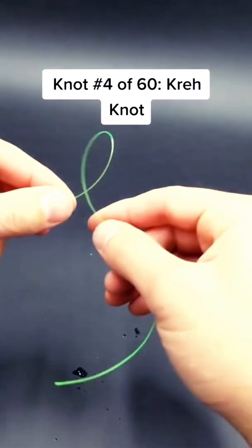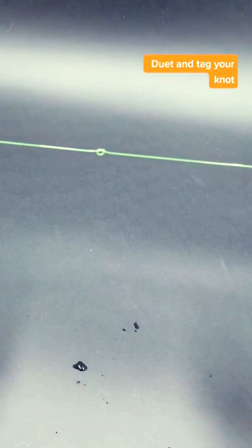Start with an overhand knot, just like this, pull it tight, leave it a little bit open.